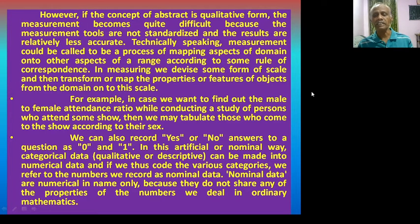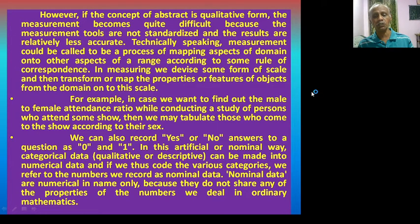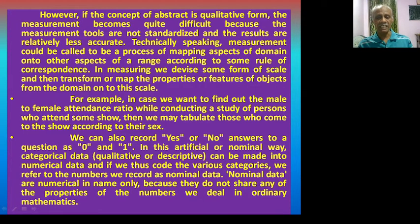For example, if we want to find out the male-to-female attendance ratio while conducting a study of persons who attend a show, we may tabulate those who come according to their gender. We can also record yes or no answers to a question as 0 and 1. In this way, categorical qualitative or descriptive data can be made into numerical data, and if we code various categories, we refer to the numbers recorded as nominal data.